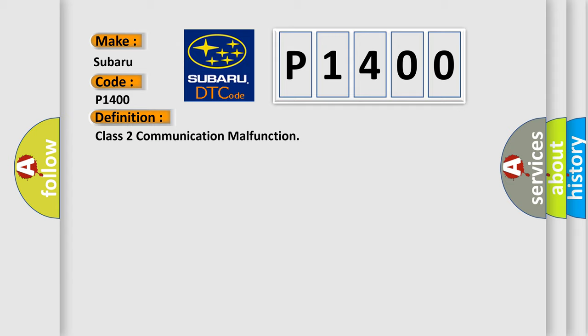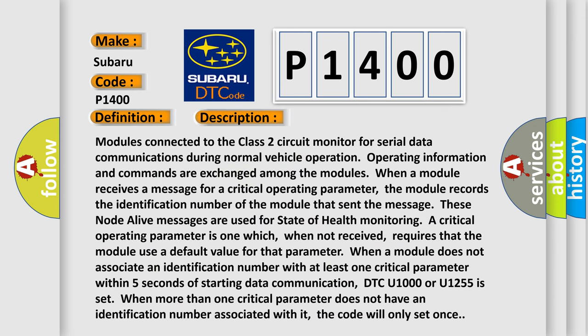Here is a short description of this DTC code. Modules connected to the Class 2 circuit monitor for serial data communications during normal vehicle operation — operating information and commands are exchanged among the modules. When a module receives a message for a critical operating parameter, the module records the identification number of the module that sent the message. These node alive messages are used for state of health monitoring. A critical operating parameter is one which, when not received, requires that the module use a default value for that parameter. When a module does not associate an identification number with at least one critical parameter within five seconds of starting data communication, DTC U1000 or U1255 is set. When more than one critical parameter does not have an identification number associated with it, the code will only set once.